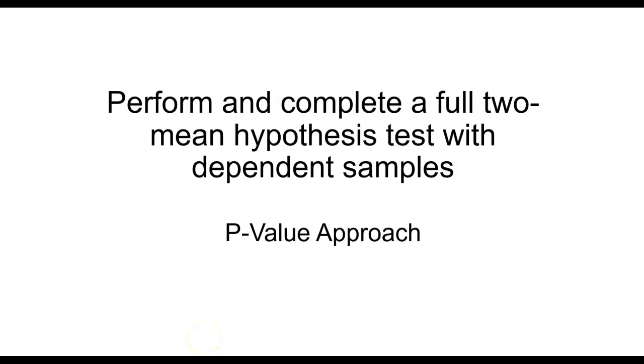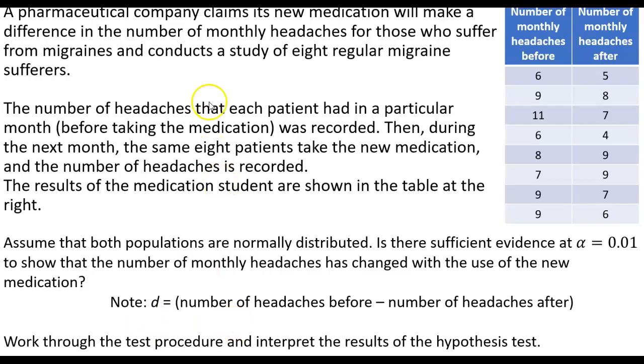Perform and complete a full two-mean hypothesis test with dependent samples using the p-value approach. First, let's look at our problem. This is a little overwhelming when you look at all of it, so don't forget to grab yourself a piece of paper and write down the important notes as you go—it'll make everything easier.